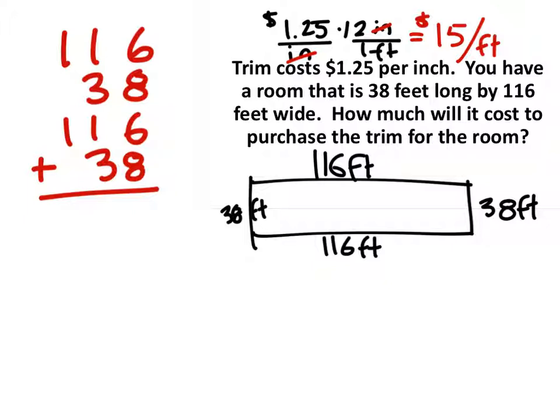So six plus eight plus six plus eight would give me 28, and I carry the two. Two plus one plus three plus one plus three would be ten, and I carry the one. One plus one plus one gives me three. So it looks like I'm going to need this much trim.